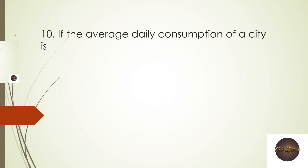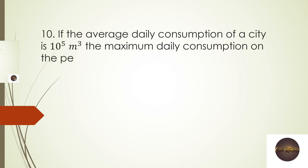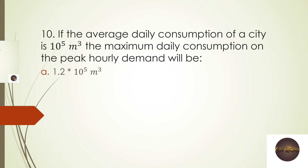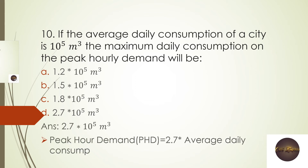Next question: If the average daily consumption of a city is 10.5 m³, the peak hour demand will be — 1.2 × 10.5 m³, 1.5 × 10.5 m³, 1.8 × 10.5 m³, or 2.7 × 10.5 m³? The formula states that peak hour demand equals 2.7 times the average daily consumption. The right answer is 2.7 × 10.5 m³.